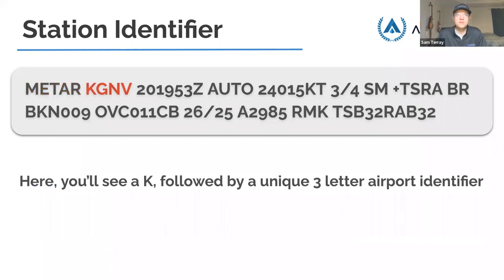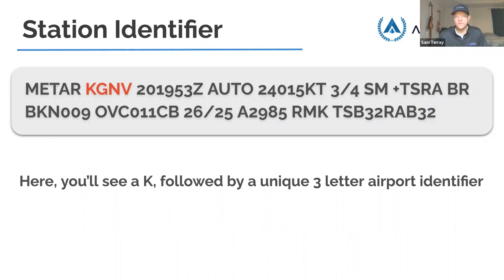Next we have the station identifier. In this example, you have KGNV — Kilo Golf November Victor — which is the Gainesville, Florida airport. The K prefix means it's a US airport. So GNV becomes KGNV. If you go to Mexico, it'll have an M prefix like MGNV. Airports in Alaska and Hawaii start with P — probably for Pacific. Canadian airports start with C. Also, if the airport identifier has numbers in it, you don't put a K in front.